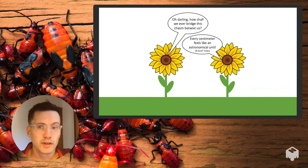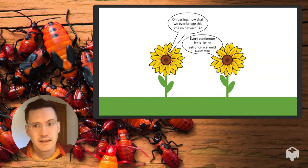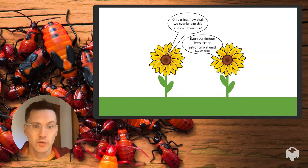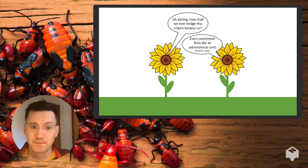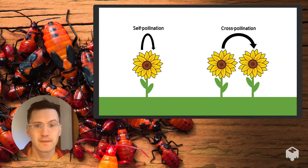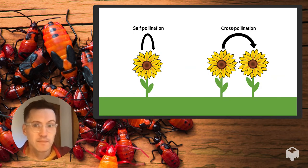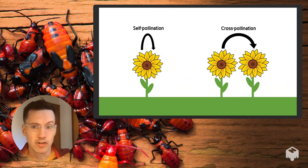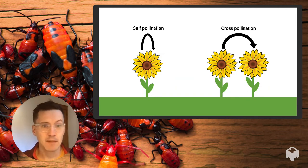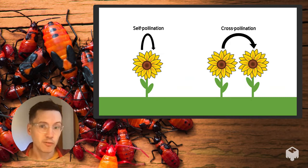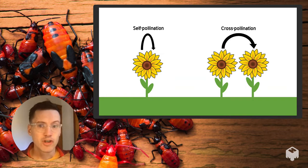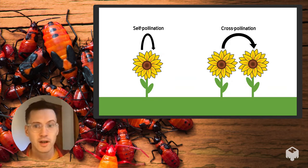Pollination is an extremely old and important mutualism between animals and plants. Because plants aren't able to move, they face some unique challenges for sexually reproducing organisms — how do you get your gametes from one individual to another? Self-pollination is a strategy some plants use, but very few are obligately self-compatible, largely due to the evolutionary benefits of cross-pollination, where genes move a considerably greater distance and create novel genetic combinations more likely to confer positive fitness benefits.